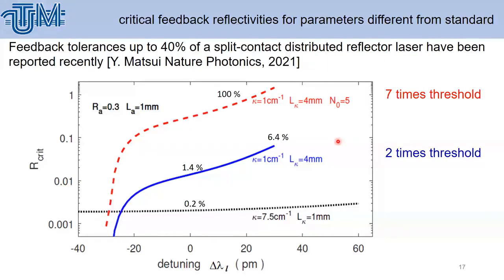Next we look for critical feedback reflectivity for parameters different from standard feedback tolerance. We found up to 40 percent, which was reported recently in this paper. This was proved in our calculations—we got the same 40 percent critical feedback reflectivity. This is good validation that our simulations are close to what was obtained in experiments.